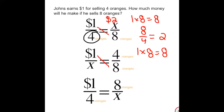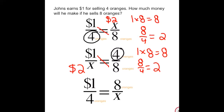Then we divide by the only remaining value, which in this case is once again four. So eight divided by four is equal to two, which once again we know is the correct answer.